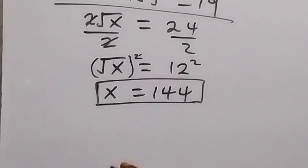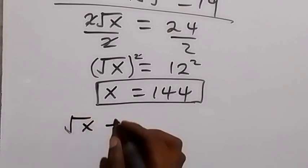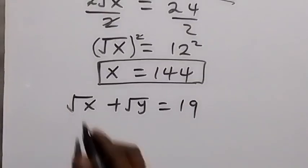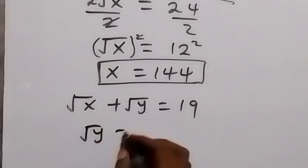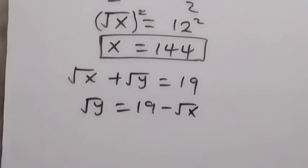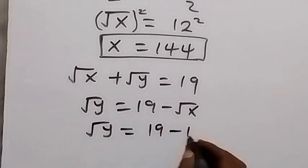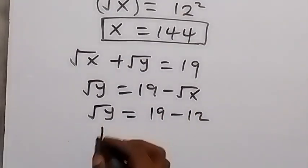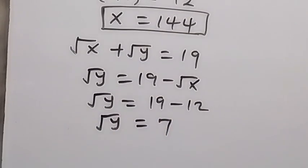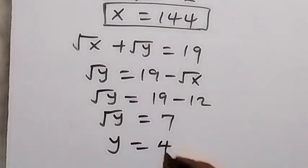And also, using the same equation 2, we have root x plus root y equals to 19. We can take root x to this side, and we have root y equals to 19 minus root x. From there, root x is 12, so we have root y equals to 19 minus 12. And here, we have root y equals to 7. When we square both sides, y gives us 49. So y is equal to 49.